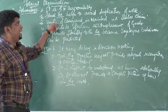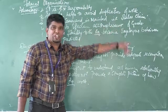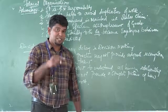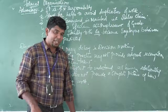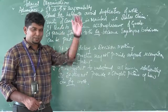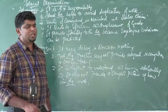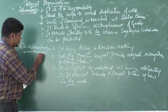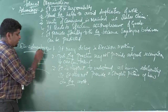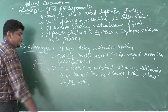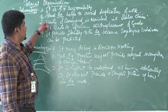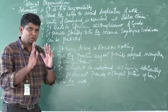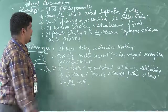Third advantage: unity of command is maintained — that is the scalar chain. You studied this in the principles of management chapter. In formal organization, there is a clear-cut message from top level to middle level, and middle level to low level. Unity of command is maintained through the scalar chain.